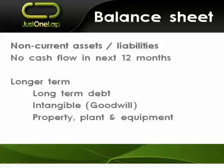Obviously your intangibles sit on the asset side of the balance sheet — that would be, for example, your goodwill — and they're not going to realize any cash flow within the next year. Property, plant, equipment — those tools that you use to make the profits, to make the widgets, whatever it is that you do in the business — you're unlikely to be selling those in the next year, so they are non-current.